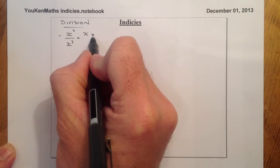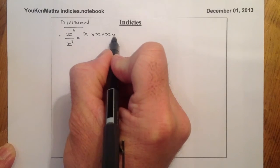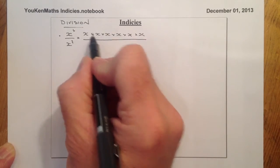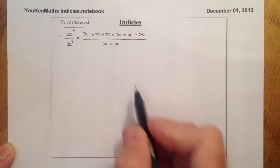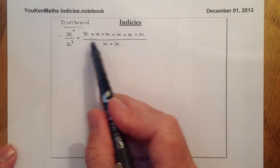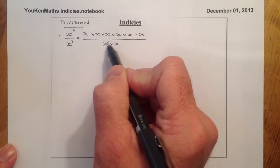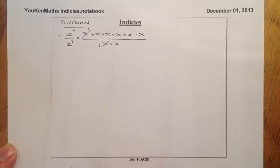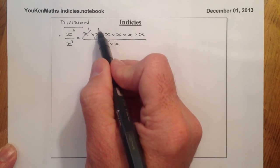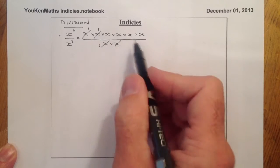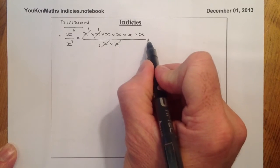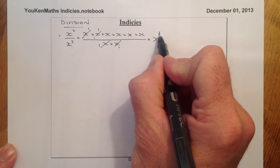If I write that out in full first of all, that gives me 6 x's on the top and 2 x's on the bottom, on the denominator. If I simplify this fraction by dividing the top and the bottom by x, I get a 1 there and a 1 there. Doing it again for the other x on the denominator, I'm left with x, x, x and x — which gives me x to the power of 4.